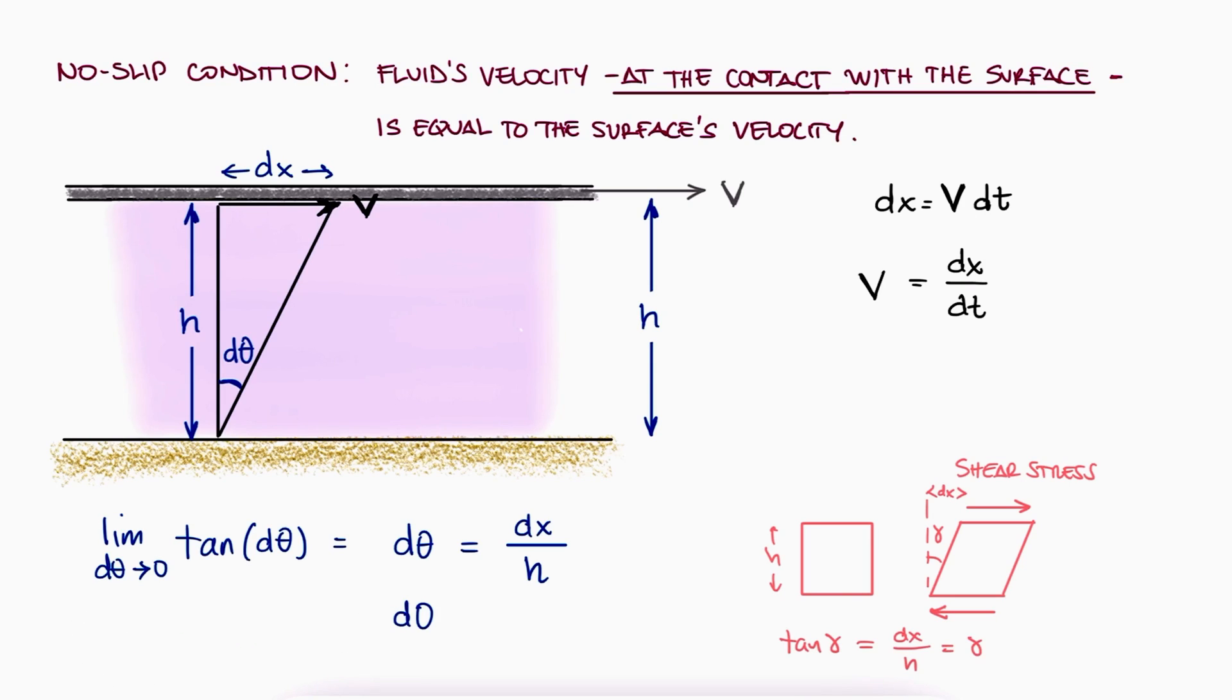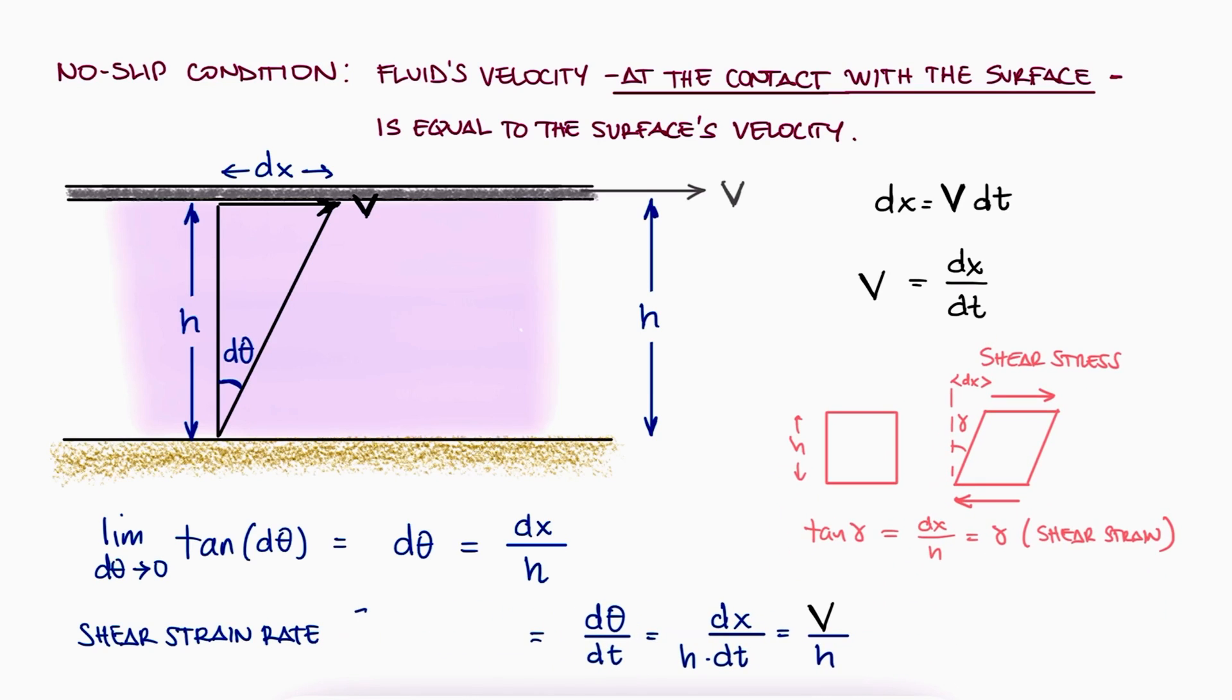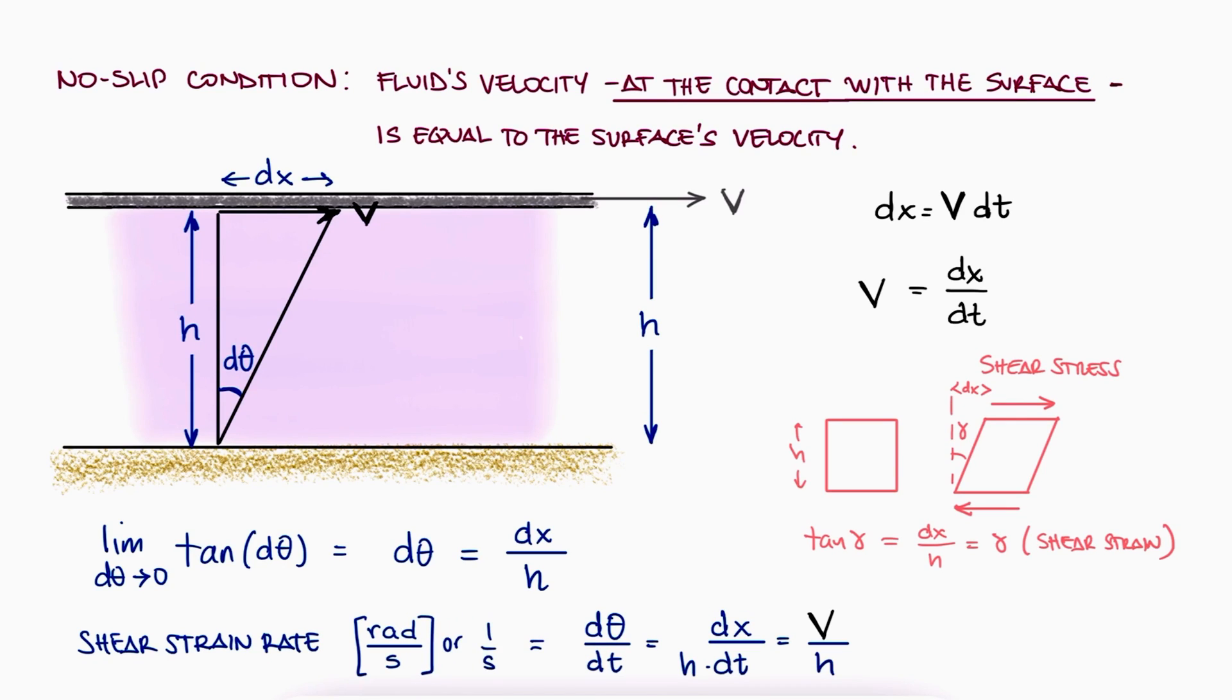If we now divide both sides by dt, the left-hand side is what we can define as the shear strain rate, and we see that the right-hand side is the velocity v over h. The units of the shear strain rate are therefore radians over second, or just one over second, since radians is a dimensionless unit.